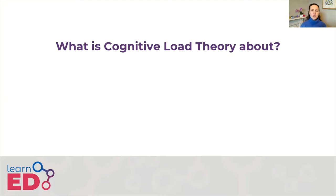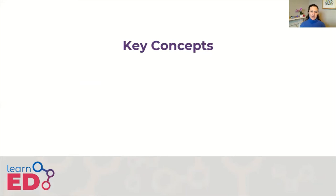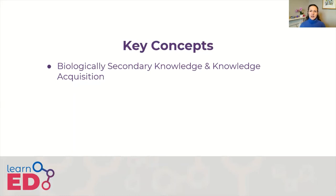Before we start, it's probably worth considering a few key concepts. Firstly, Sweller uses the concepts of biological primary and secondary knowledge — the idea that there are two types of knowledge. Biological primary knowledge is knowledge that we gain just because we're part of society, such as language or recognising faces. Biological secondary knowledge is more abstract information that has to be explicitly passed from one person to the next, mostly through formal education.